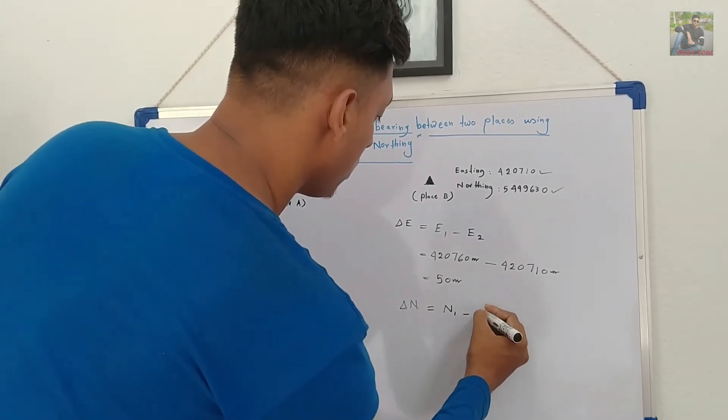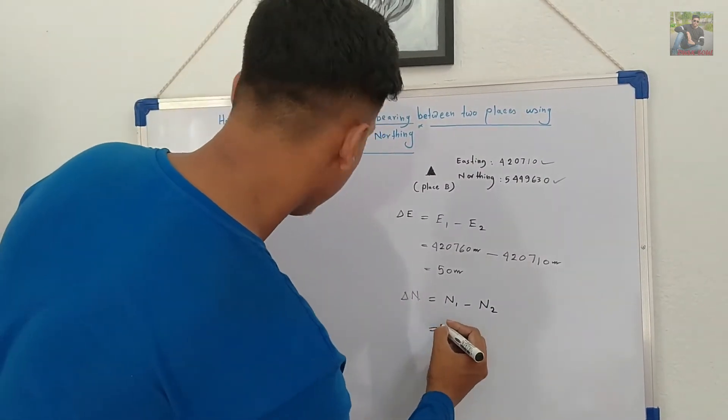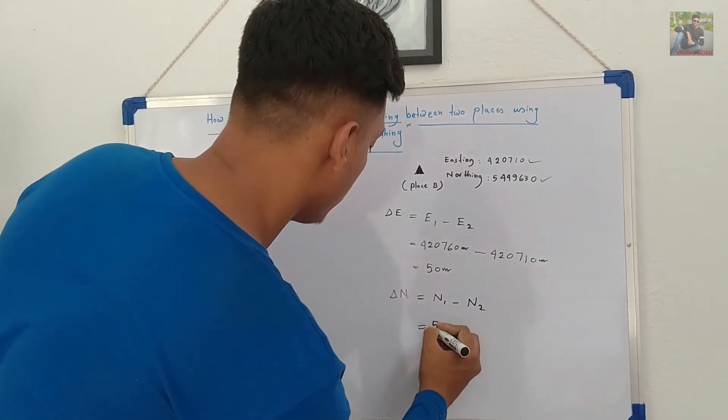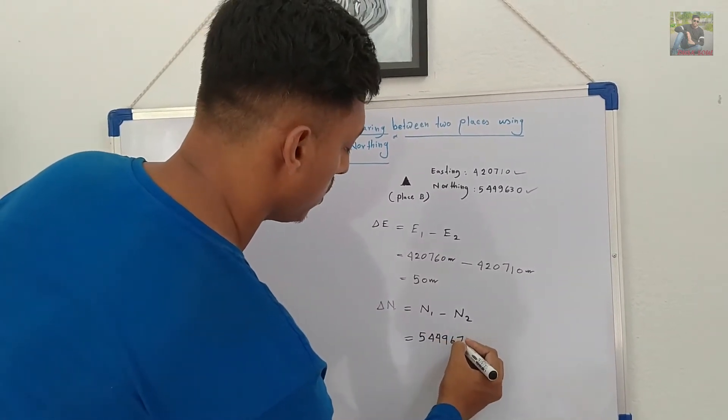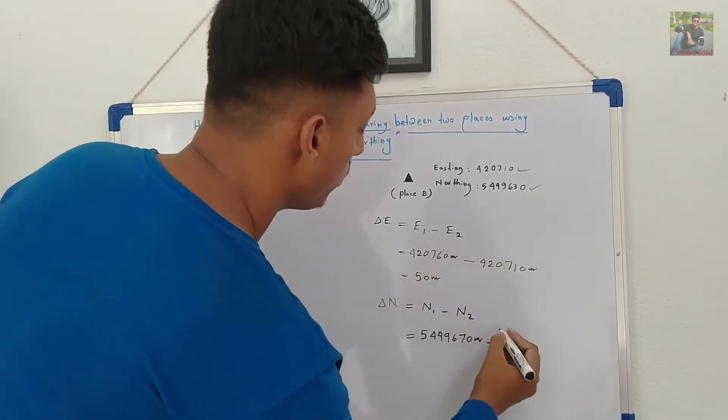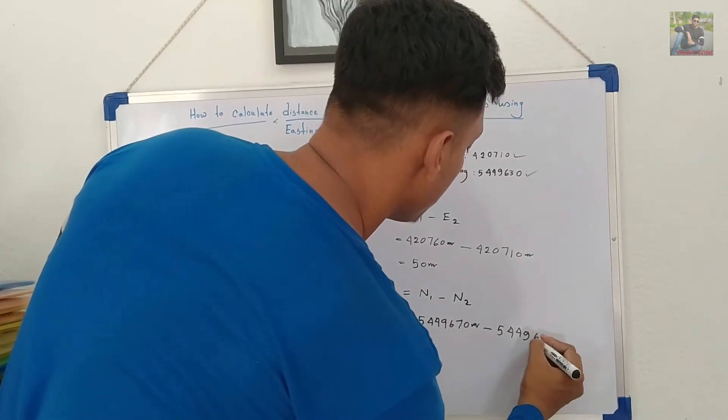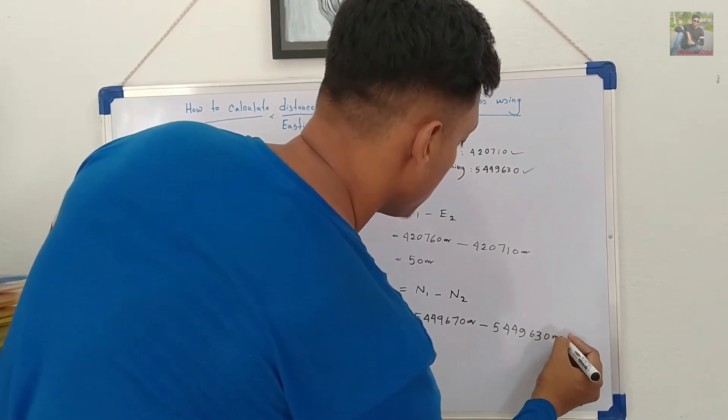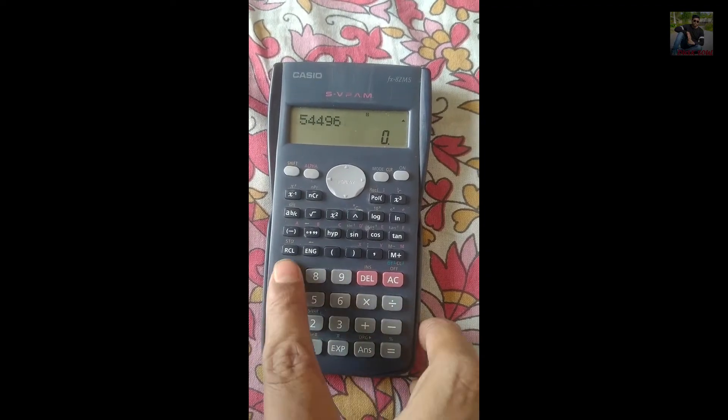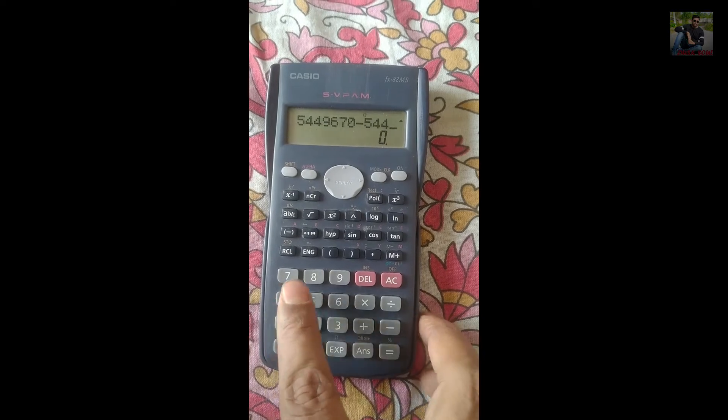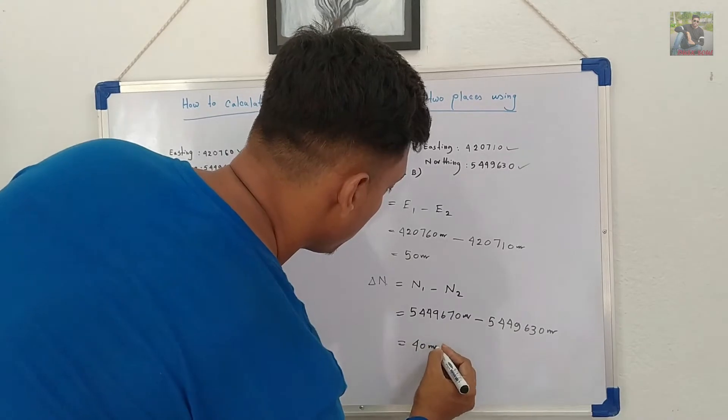Now, take northing 1 and subtract it from northing 2. Northing 1 is 5449670, and northing 2 is 5449630. And the result is 40 meters. You can see this.